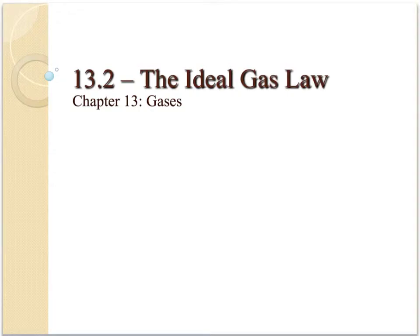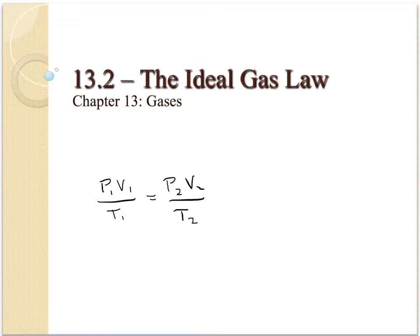Hello and welcome back to Chapter 13. Today we're going to talk about Section 13.2, which deals with the ideal gas law. Before we do that, if you recall back in Section 13.1, we talked about the combined gas law, and I want you to keep that in the back of your mind. The combined gas law was P1V1 divided by T1 equals P2V2 divided by T2. Don't forget that temperature has to be given in Kelvin, which is found by taking your degrees Celsius and adding 273 to it.